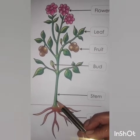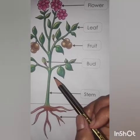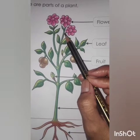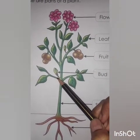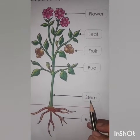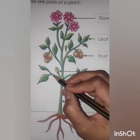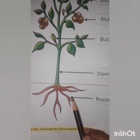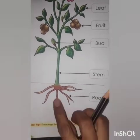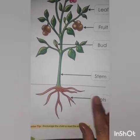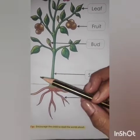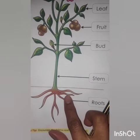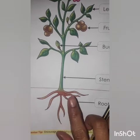Next: stem. S-T-E-M. This is a stem, on which leaves, flowers and buds grow. Now what is this? These are roots. R-O-O-T-S. Roots. Roots means jaade. Roots are found under the soil. These are roots of the plant which are under the soil.